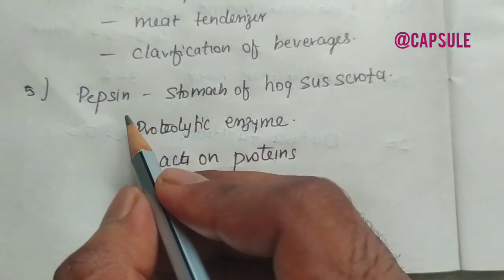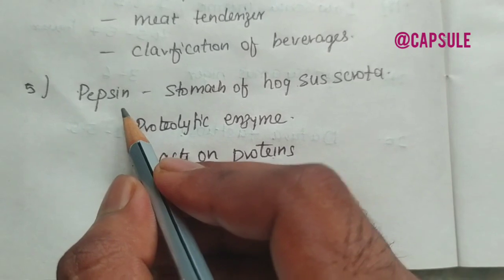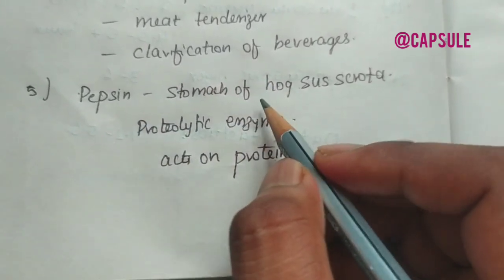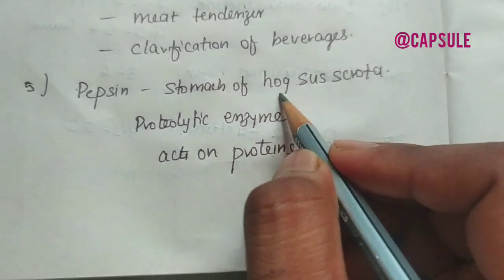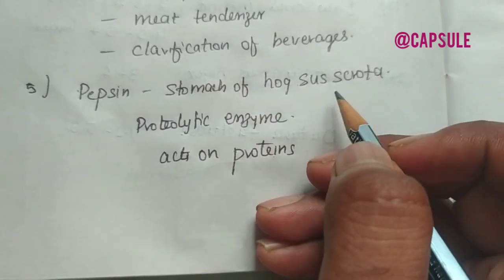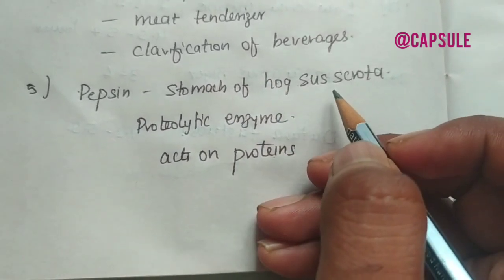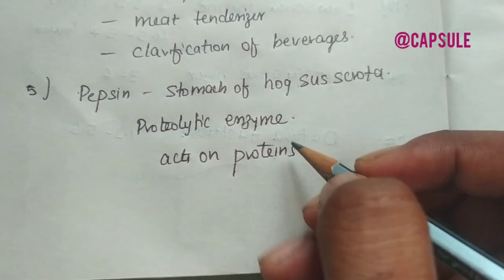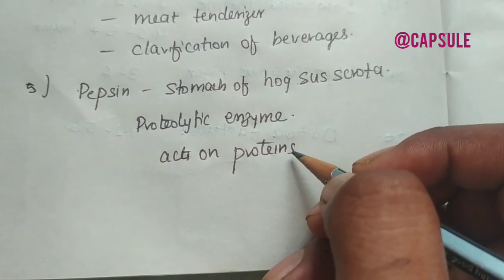Coming to the final enzyme, pepsin. It is obtained from the fresh stomach of Bos taurus. It is a proteolytic enzyme. It acts on proteins.